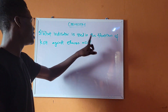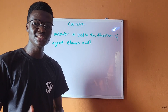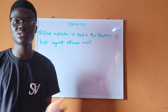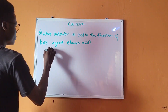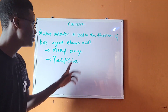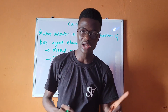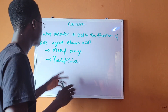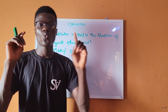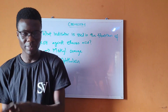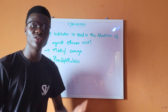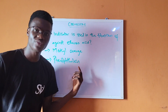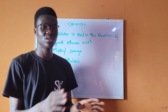The next question: what indicator is used in the titration of KOH against ethanoic acid? In titration we use two major indicators: methyl orange and phenolphthalein. For strong acid vs. strong base, any suitable indicator works. For strong acid vs. weak base, use methyl orange. For weak acid vs. strong base, use phenolphthalein. For weak acid vs. weak base, no suitable indicator exists.